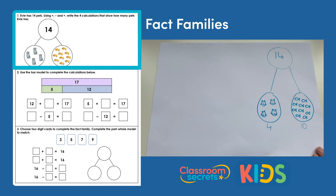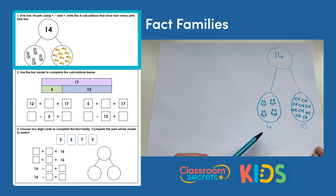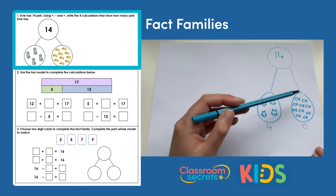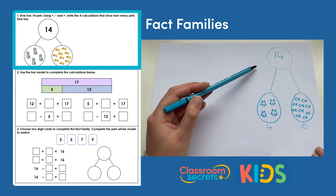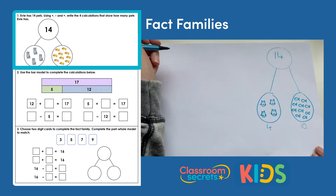For our four calculations, we know that for a fact family we need two adds and two subtracts. Part plus part equals whole, so for our additions we could have four add ten equals fourteen.